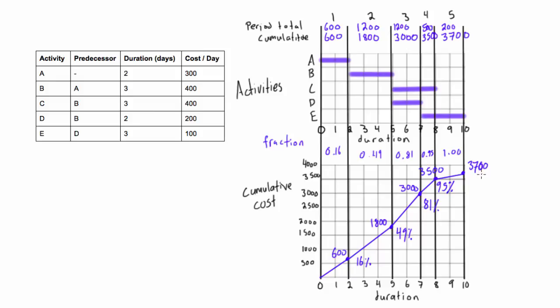And then finally here, when you've hit $3,700, the total project cost, well, this would just be 100%. So again, very simple, very similar to drawing just the cumulative cost.